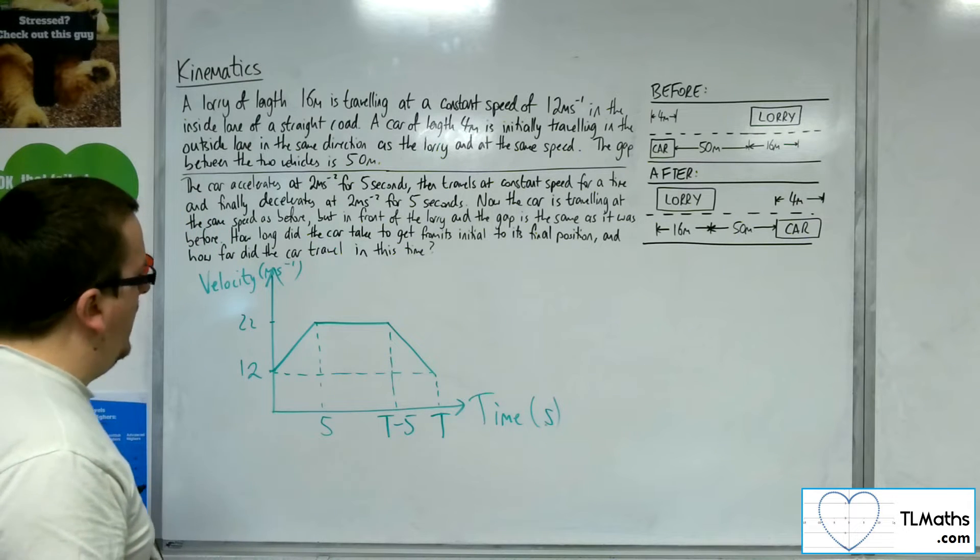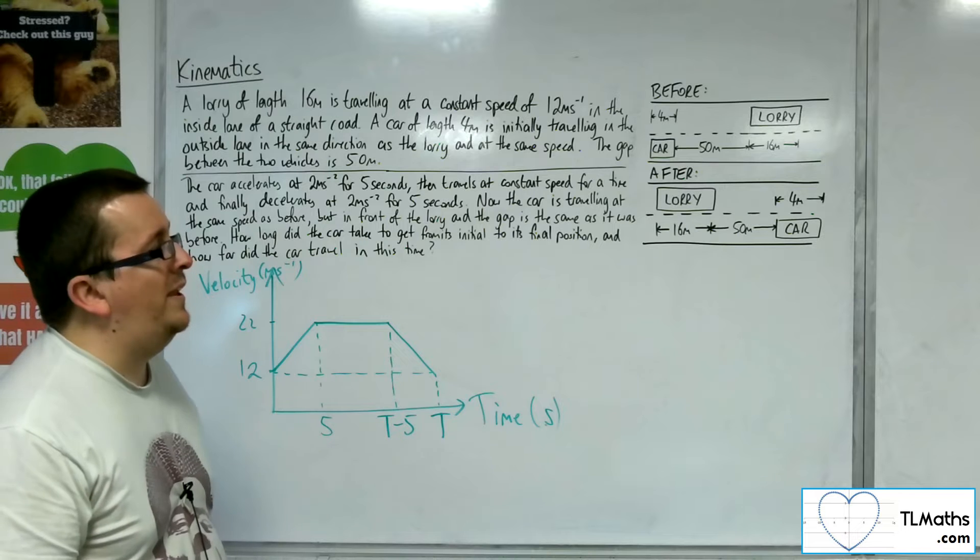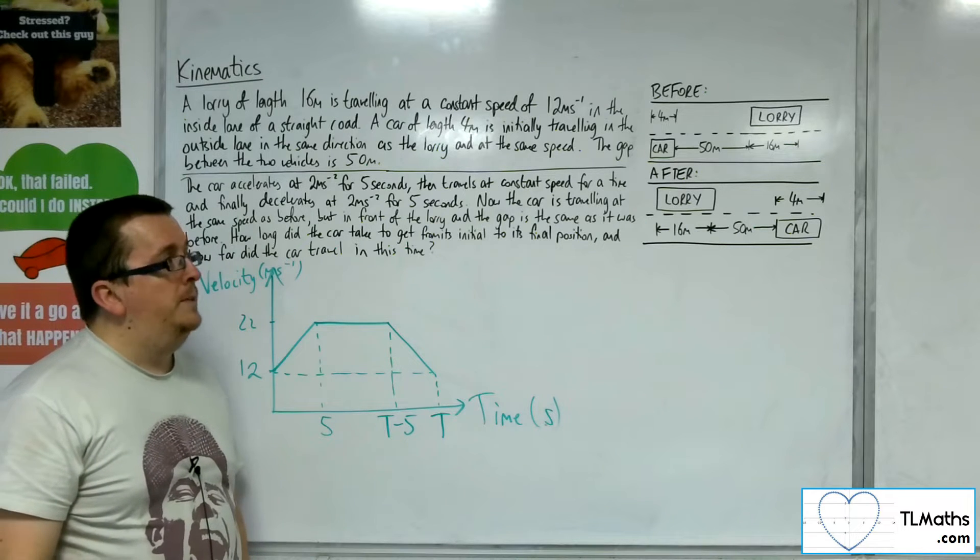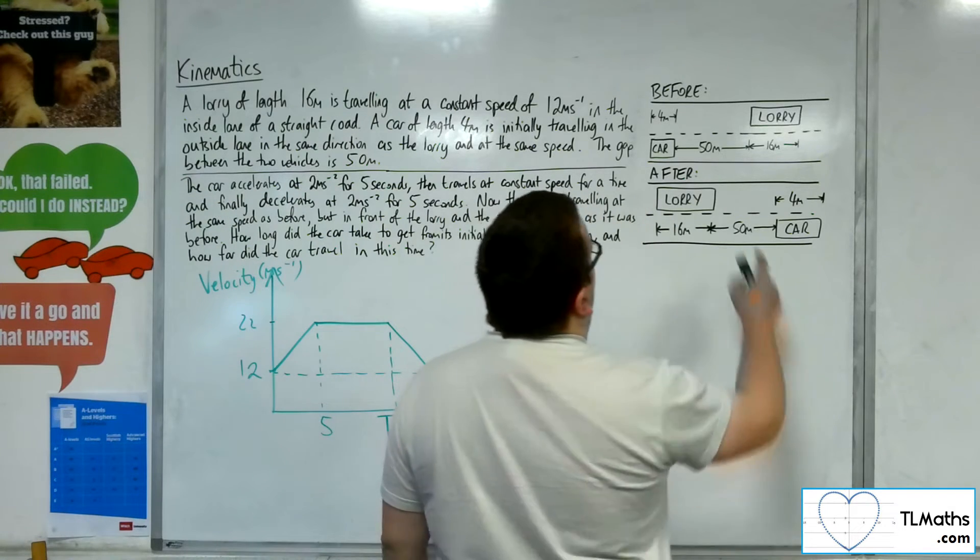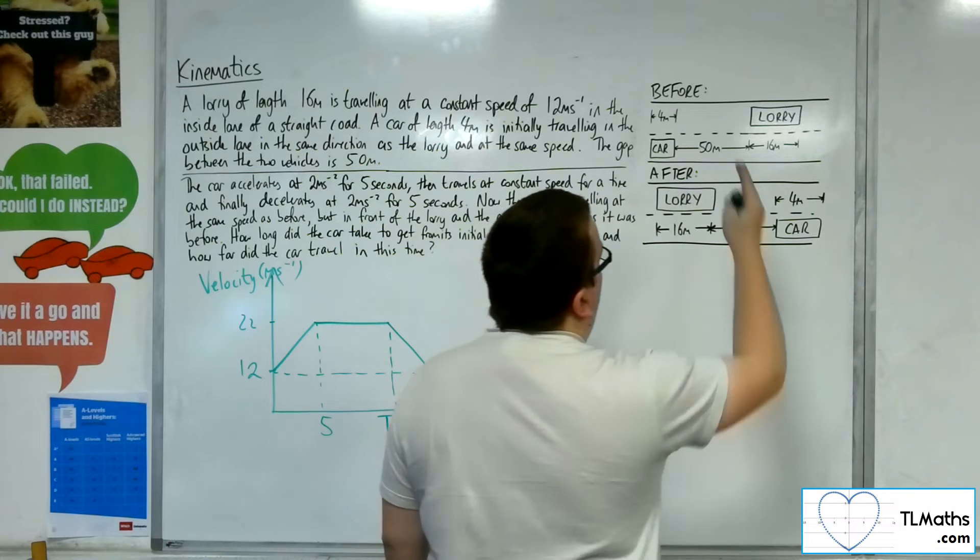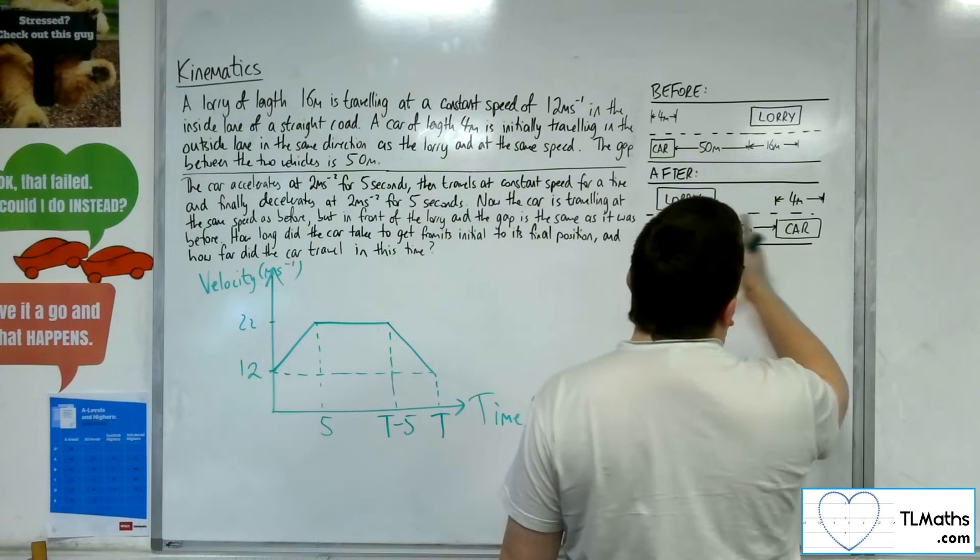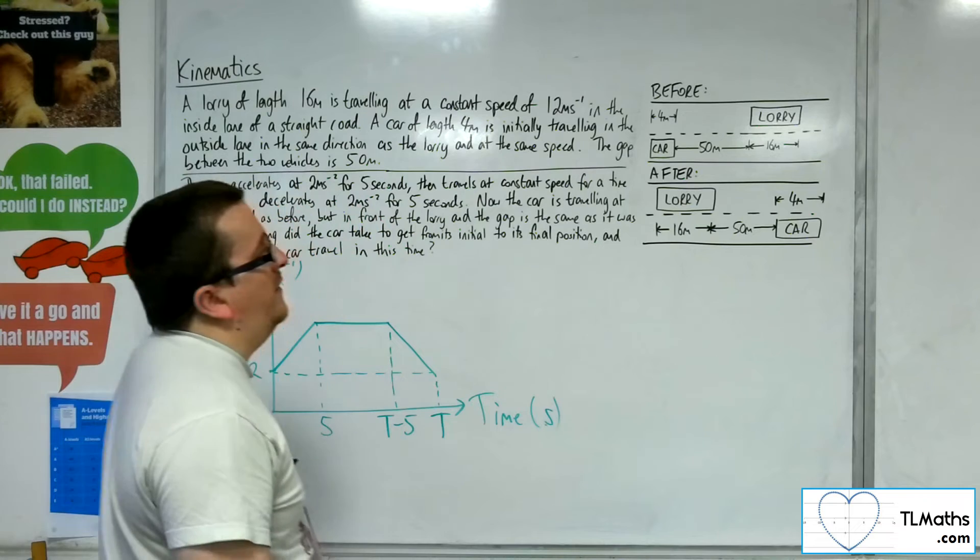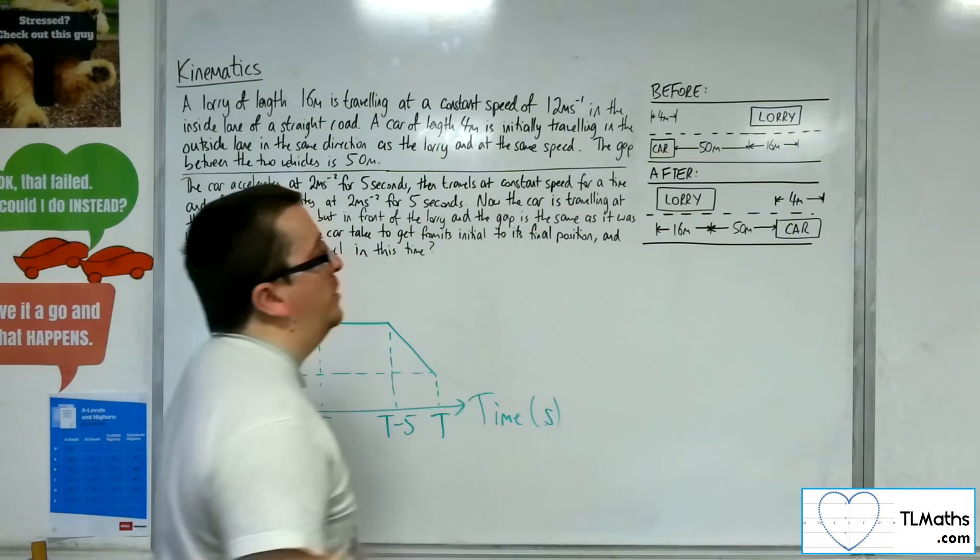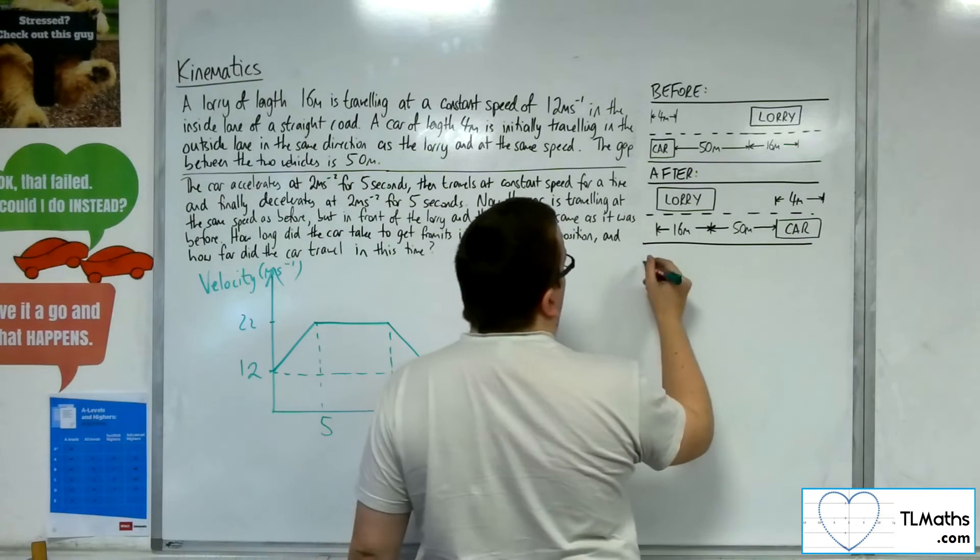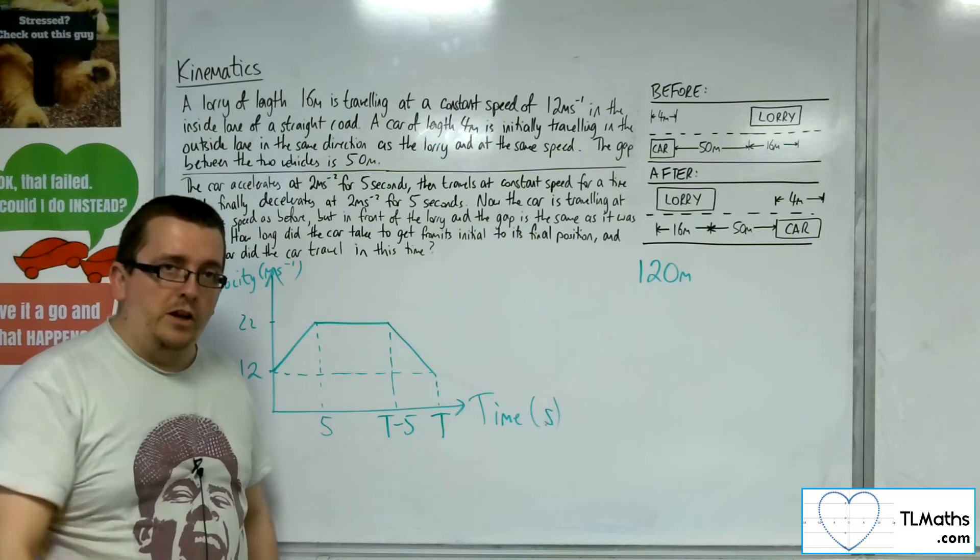I can look at the situation as it stands to really see how far has the car travelled relative to the lorry. The car needs to travel 50 metres to catch up to the lorry and then 16 metres to get in line with it, so that's 66 metres. Then it's going to travel another 50 metres beyond it, so that gets us to 116 plus another 4 metres. So the nose of the car is in its final position. That's 120 metres. So the car travels 120 metres relative to the lorry.